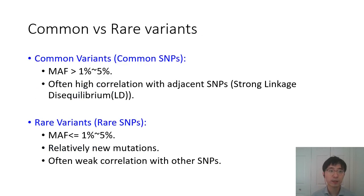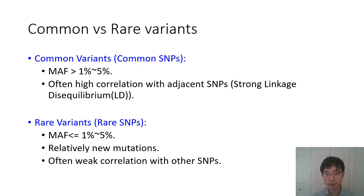Here is a comparison between common versus rare variants. For common variants, the minor allele frequency is often larger than 1% or 5%, which are very common cutoffs between common and rare variants. Common variants often have very high correlations with adjacent SNPs because of high LD. For rare variants, as they are mostly relatively new mutations, they often have very weak correlations with other SNPs.